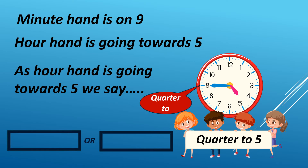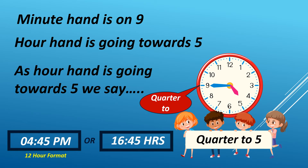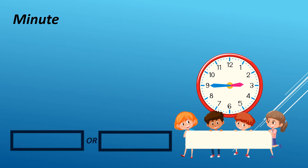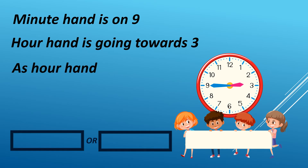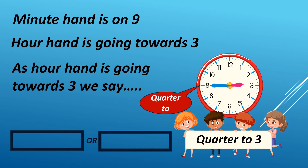It can either be AM or PM. For example, it is 4:45 PM in 12-hour format. We read it as 1645 hours in 24-hour format. When the minute hand is on 9 and the hour hand is going towards 3, we say quarter to 3.